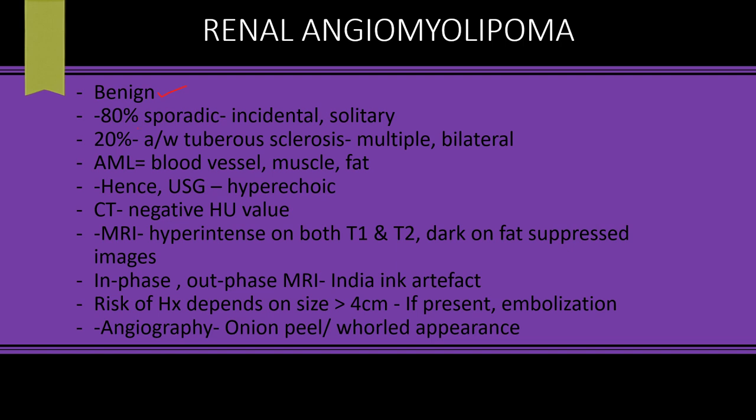To summarize: renal angiomyolipoma is a benign lesion. Eighty percent of the time it is sporadic and incidentally found, presenting as a solitary lesion. Twenty percent of cases are associated with tuberous sclerosis, in which case it is multiple and bilateral.